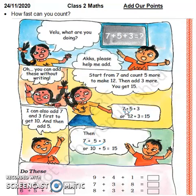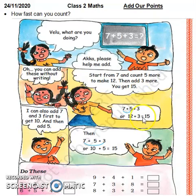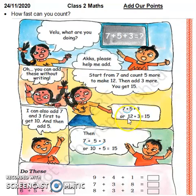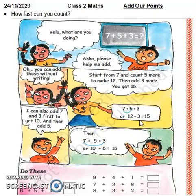7 के बाद 5 और गिनना है। साथ में count on करेंगे — 7 के आगे: 8, 9, 10, 11, 12। तो 5वें नंबर पर हमारा count आया 12। यहाँ 12 लिख दिया। अब plus 3 — 12 के आगे 3 count on करेंगे: 13, 14, 15। जो 3rd पर आके रुका वो 15 था।